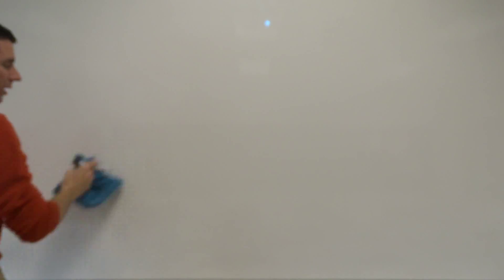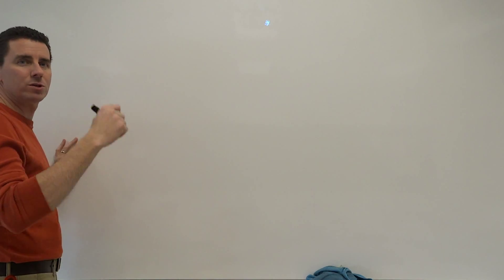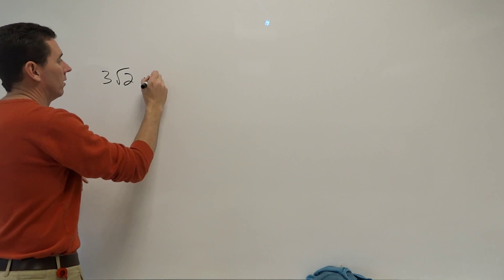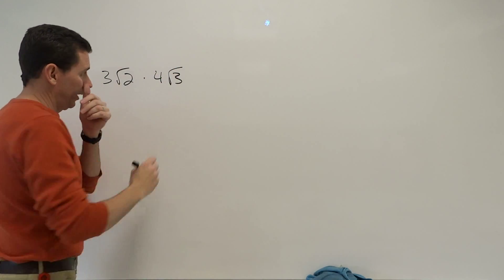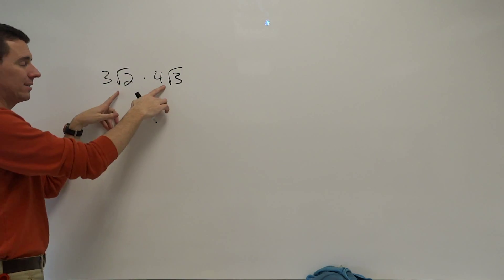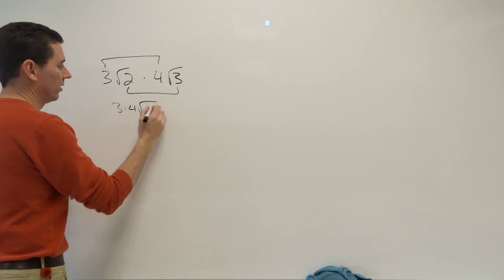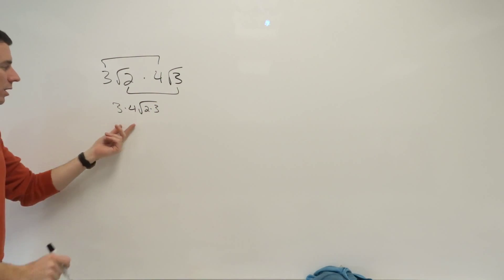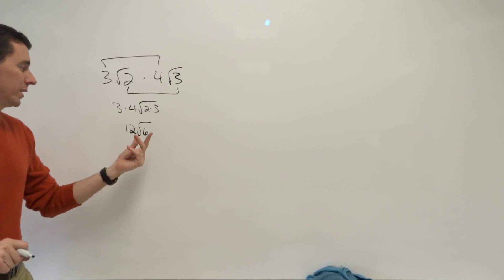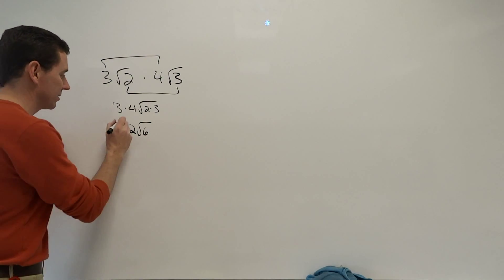Multiplying and dividing — let's look at multiplying first. Let's say 3 root 2 times 4 root 3. When you multiply radicals together, you multiply what's outside together and multiply what's underneath together, provided the index is the same. Both are square roots, so I multiply 3 times 4 and under the radical I get 2 times 3. That gives me 12 root 6. Always ask yourself: is that simplified? Any factors of 6 that are perfect squares? No — so 12 root 6 is the final answer.